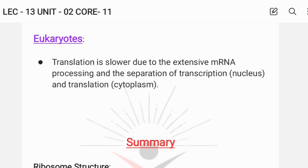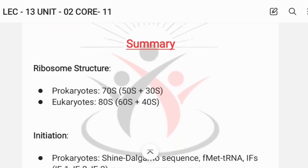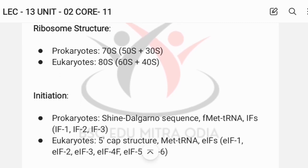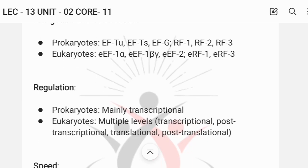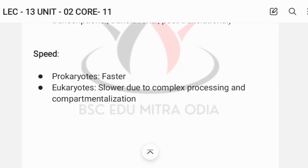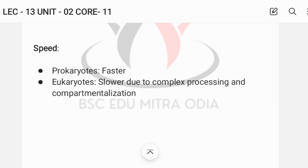So this is what we need to know about in this class. Here is a quick summary of what we learned: ribosome structure, initiation, mRNA features, elongation and termination, regulation, and speed. I hope you have enjoyed the lectures. If you like the videos, please like and subscribe to the channel. Thank you for watching this video — if you have any doubts, leave them in the comment box. Thank you.